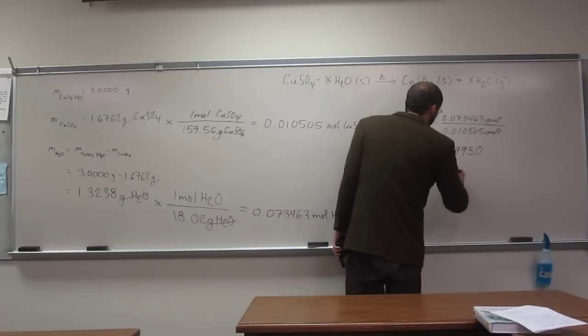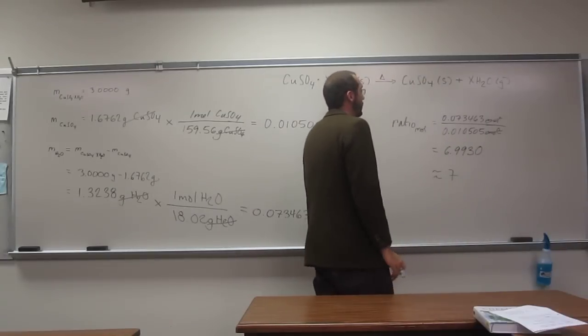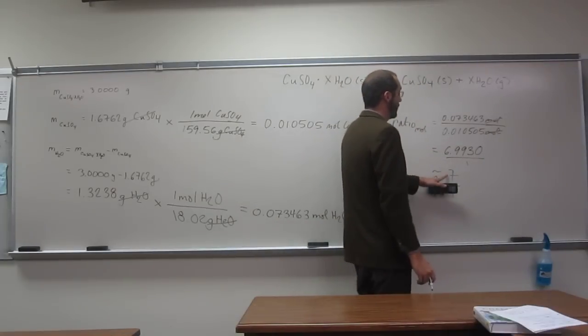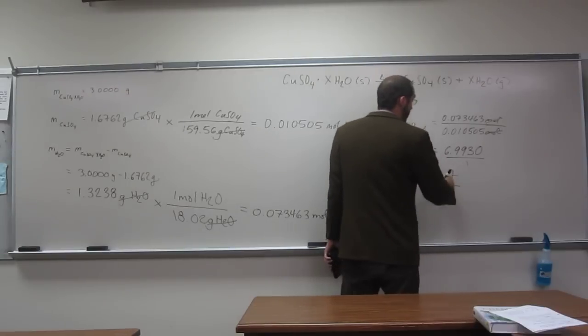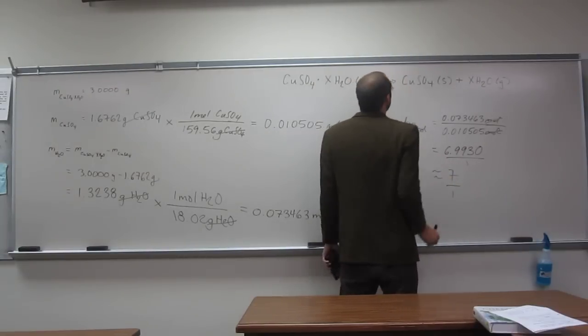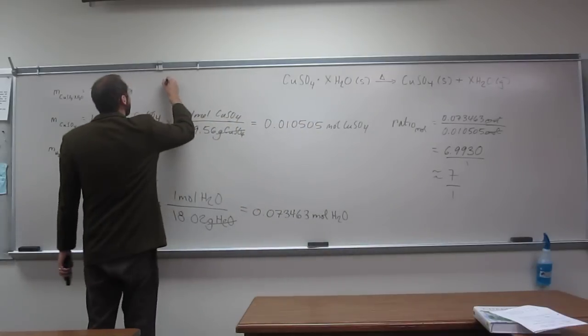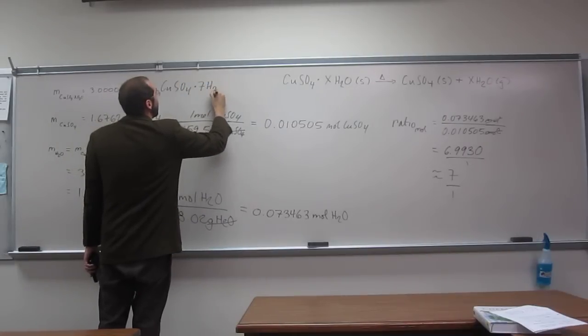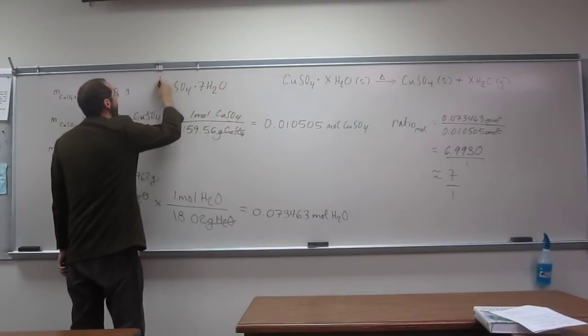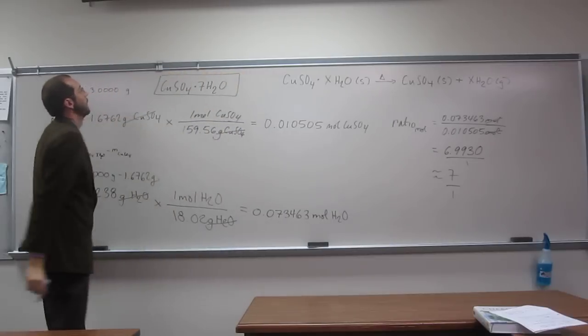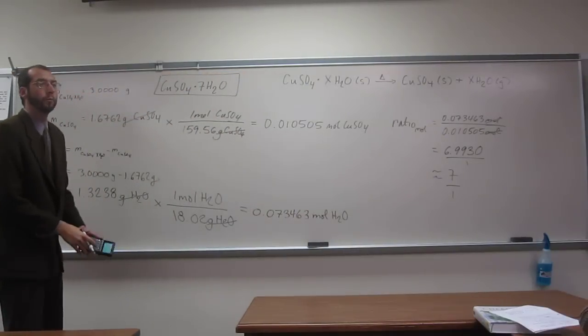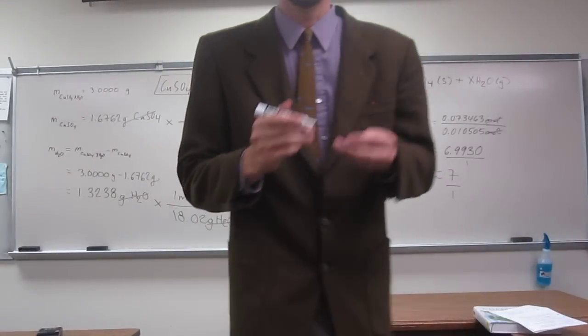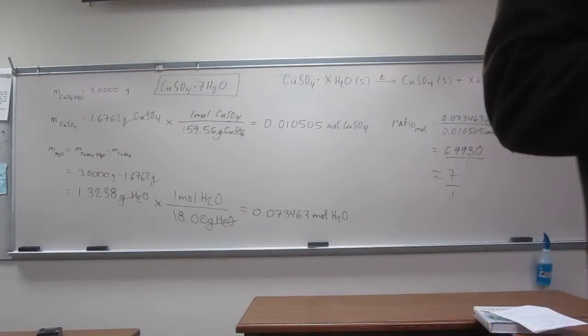So, that's approximately 7, okay, so, or 7 to 1, if you want to think about it still being a ratio. Okay, so it's a 7 to 1 ratio, so what this is saying is that x is 7. Okay, so what's the formula of this stuff, CUSO4 heptahydrate. So, this is effectively calculating, just like calculating the empirical formula, okay.